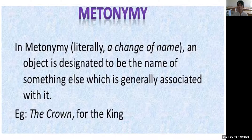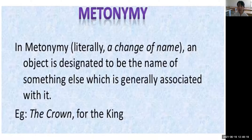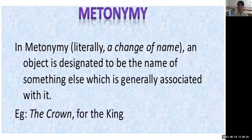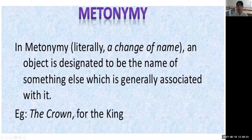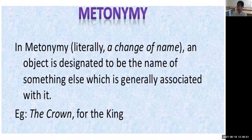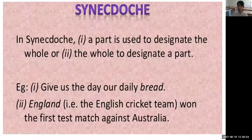For example: 'Yesterday, I read Murphy.' You didn't literally read Murphy the person — you read the book written by Raymond Murphy. Or: 'I love Navai.' You don't love Navai the person; you love the books written by Navai. Here, for example, 'the Crown' is used as a metonymy for the king or monarchy.